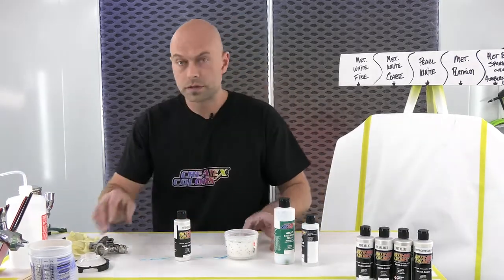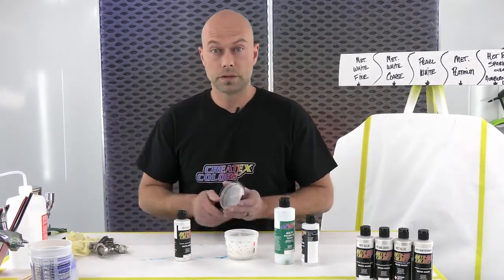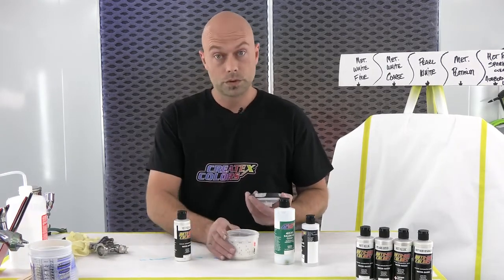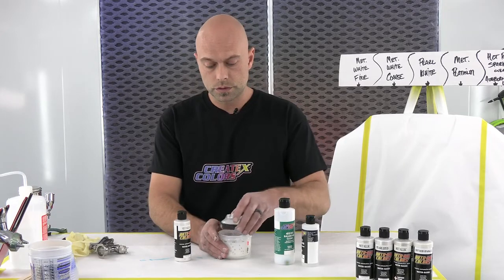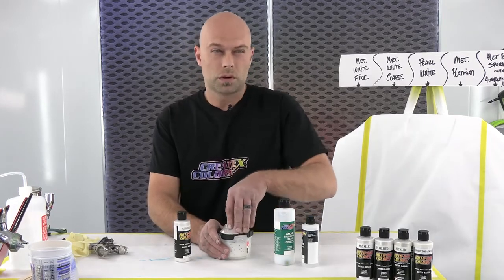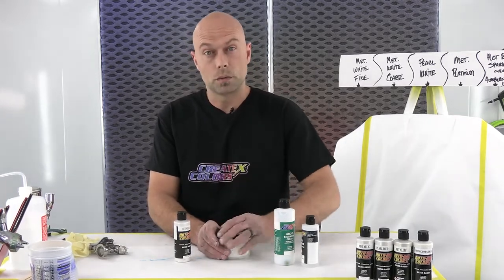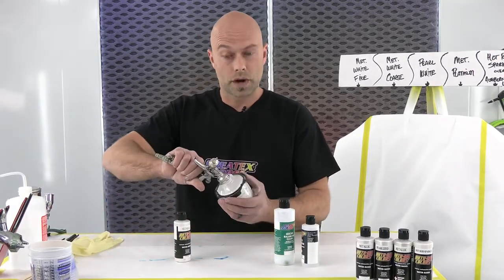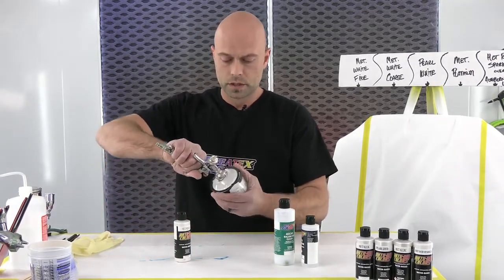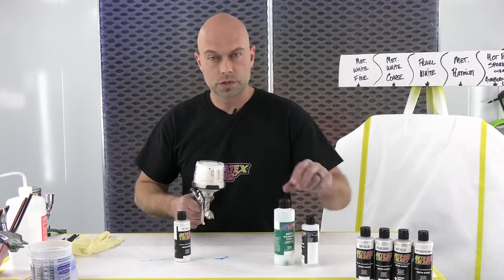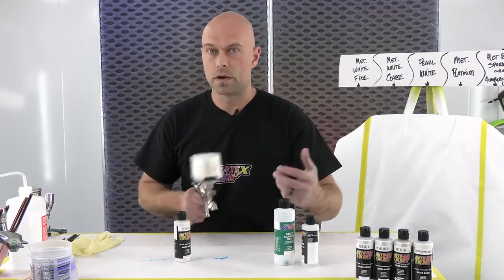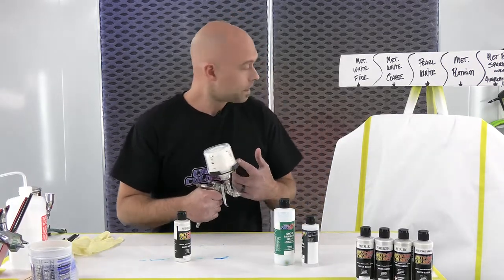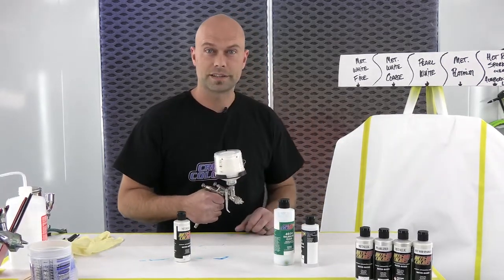If you've seen the other videos, I do use the PPS cups. They have built-in strainers, which are great. But if you're not using it, we do recommend straining your paint. Usually about a 200 micron, 125 to 200 is good for the water-based paint. Just cheap insurance, making sure everything's all set. So I got it in my gun. We're going to spray some so you can see what it looks like.